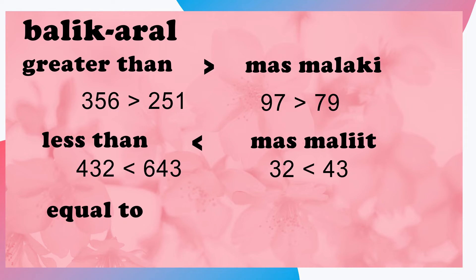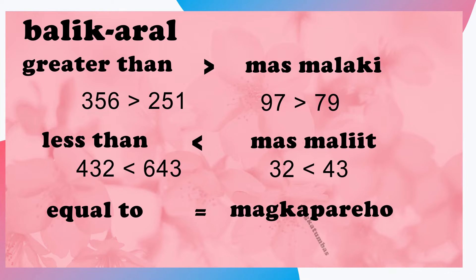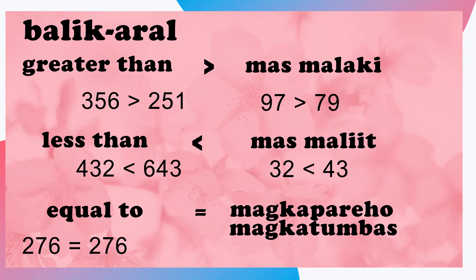At ang huling simbolo ay ang equal to. Ang equal to, o ang ibig sabihin nito ay magkapareho o magkatumbas, ginagamit natin kung pareho ang halaga o ang bilang ng nasa kanan at kaliwang bilang. Halimbawa nito, dalawang daan at pitong put anim ay equal to o magkatumbas sa dalawang daan at pitong put anim.